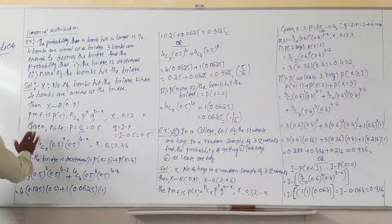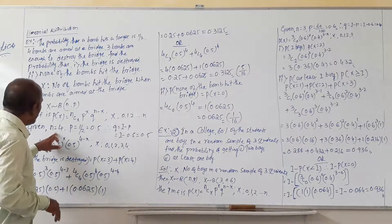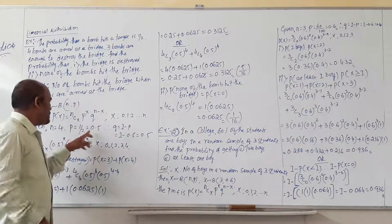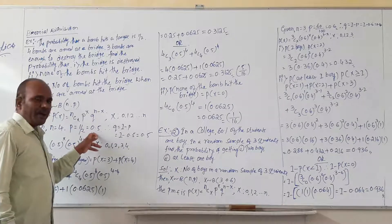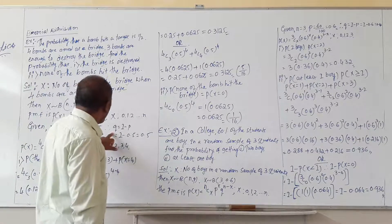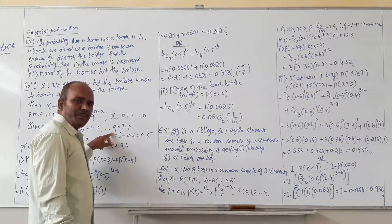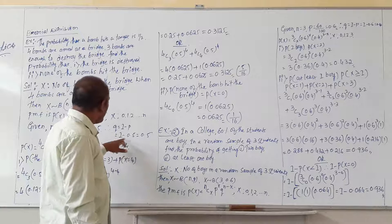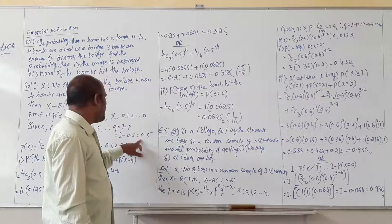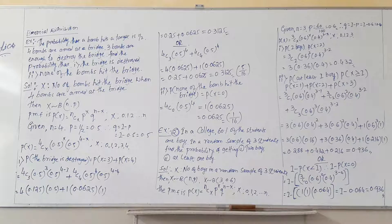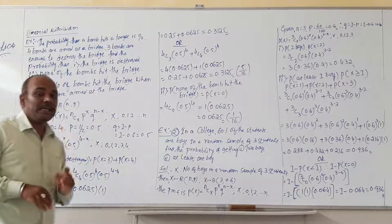So given that small n equals 4, p equals to 1 by 2, given this question, so 1 by 2, 0.5. Then how to find out q? You know very well 1 minus p you will get q value, so 1 minus 0.5 then ultimately you will get 0.5. Also q value here, p value is also 0.5 and q value is also 0.5 in this case.